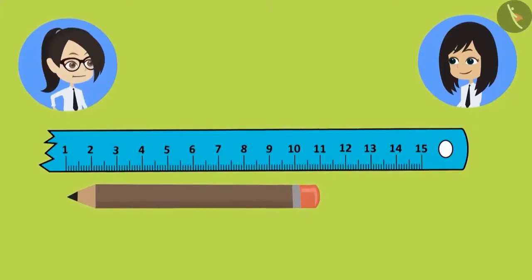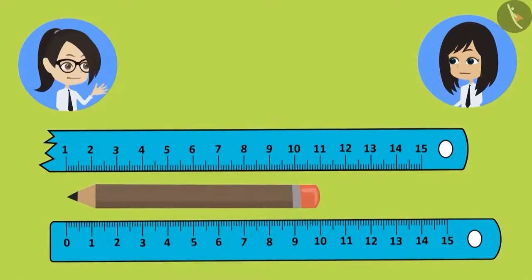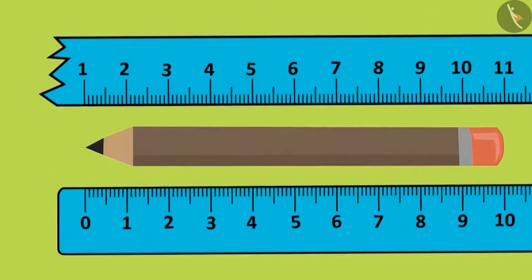Let's do one thing. Let's try to measure this pencil with the correct scale. Then we might come to know our mistake. I will start counting again. One... Wait! What happened?